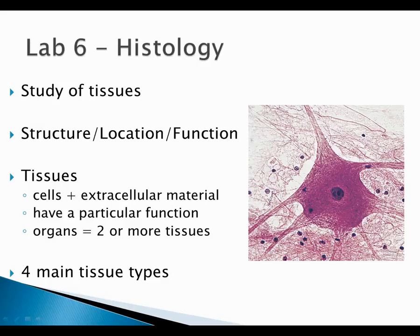We're getting into lab six histology, and we're going to break this chapter up into two parts. We're going to talk about epithelial tissue and nervous tissue first, and then get into connective and muscular. What you need to know — and we're going to hit this over and over again in this class — is structure, location, function, and the general relationship between those three things: what is it, where is it, and what does it do?